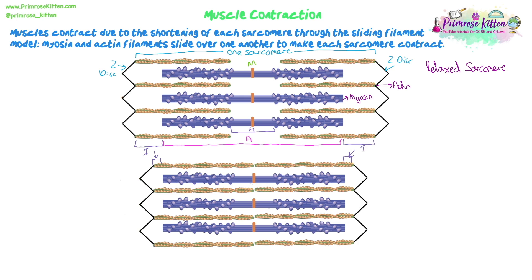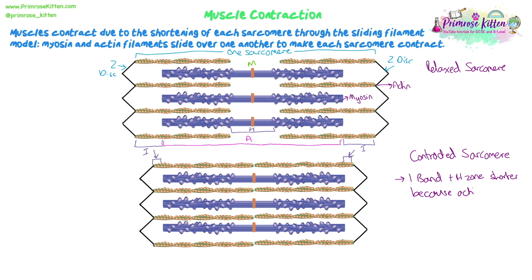The first and easiest thing to note is that the I bands will have got smaller — narrower, shorter. That means our light bands, the bands of lighter tissue, have got smaller and narrower because those actin filaments have been pulled along; they've been pulled over the myosin filaments, moved inwards.